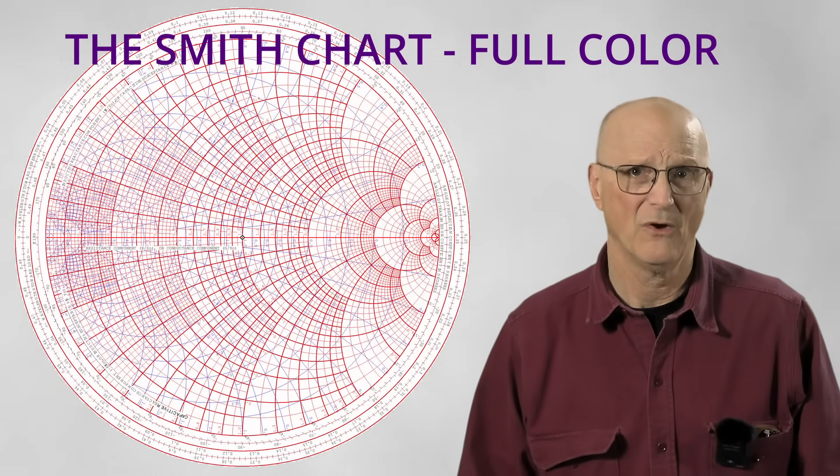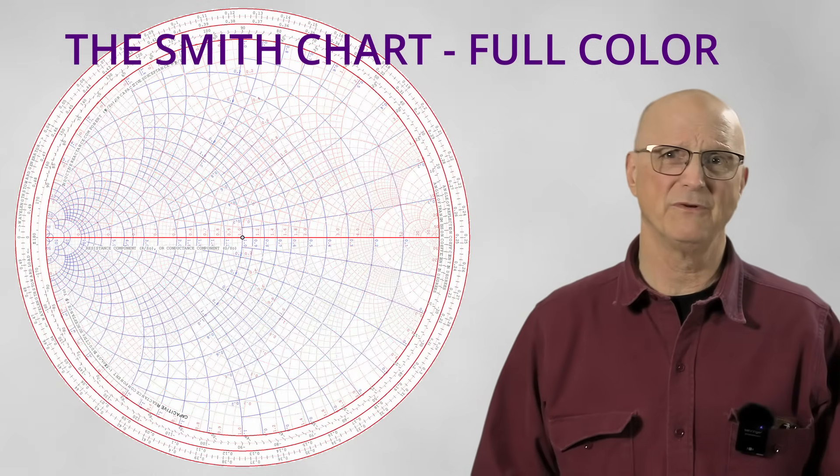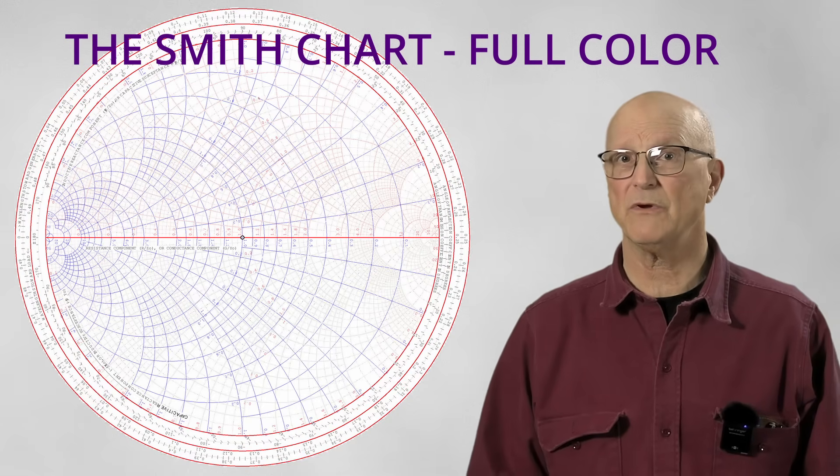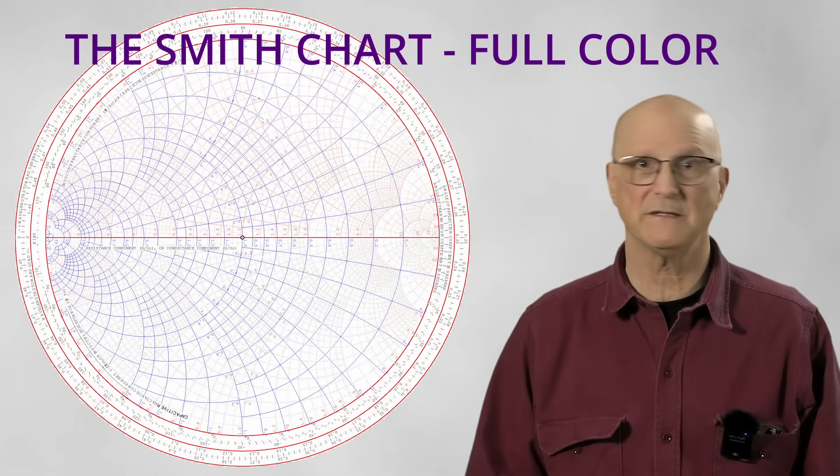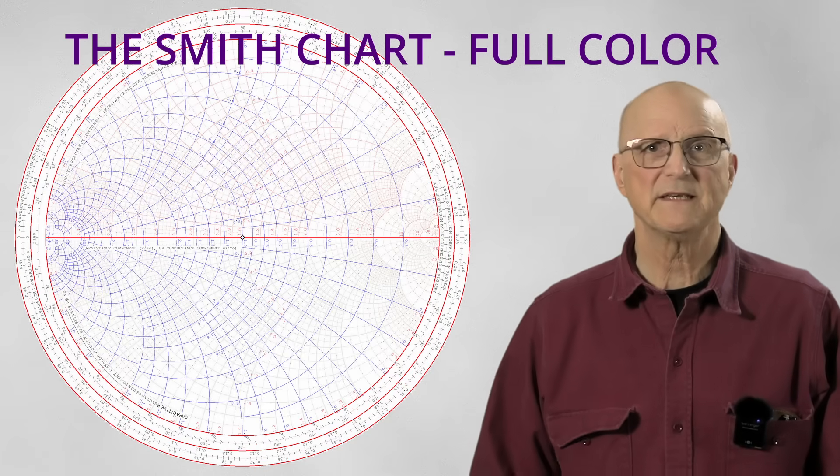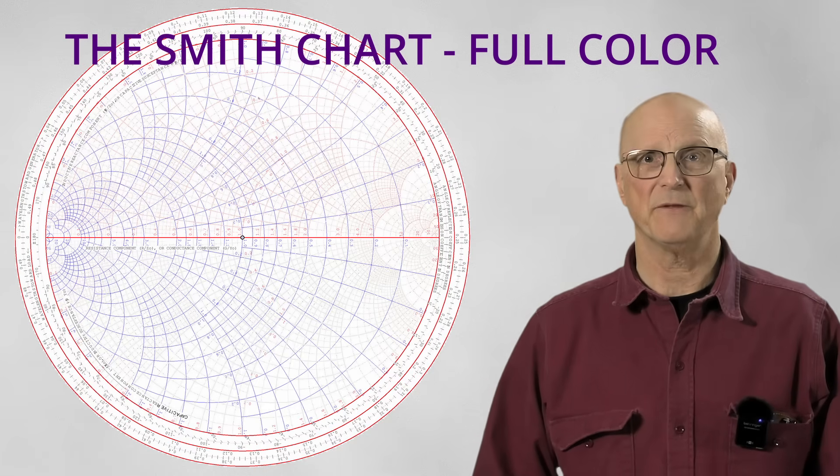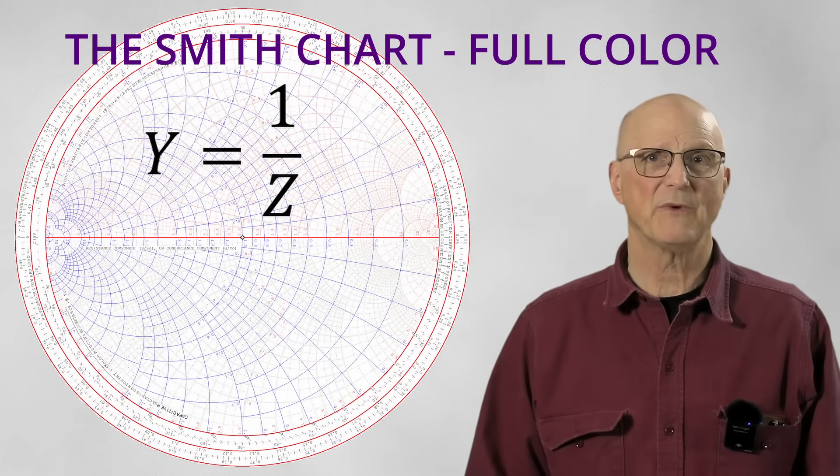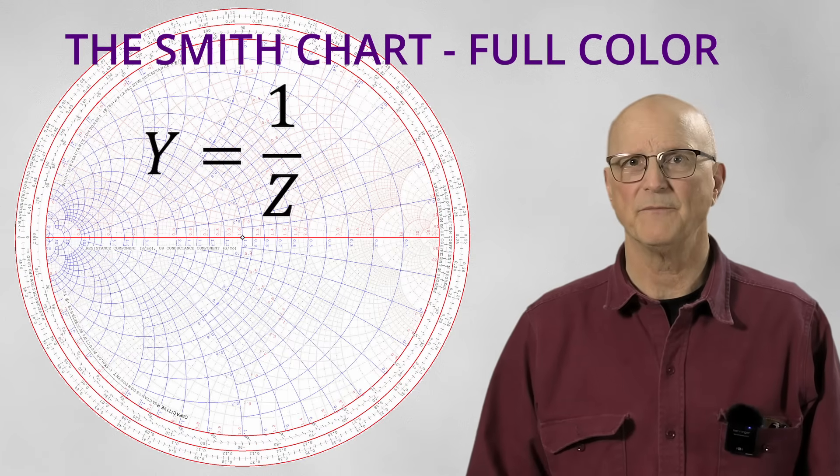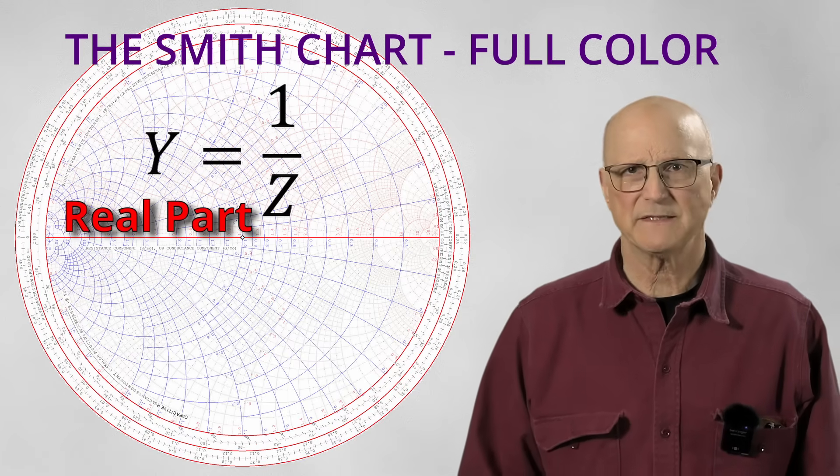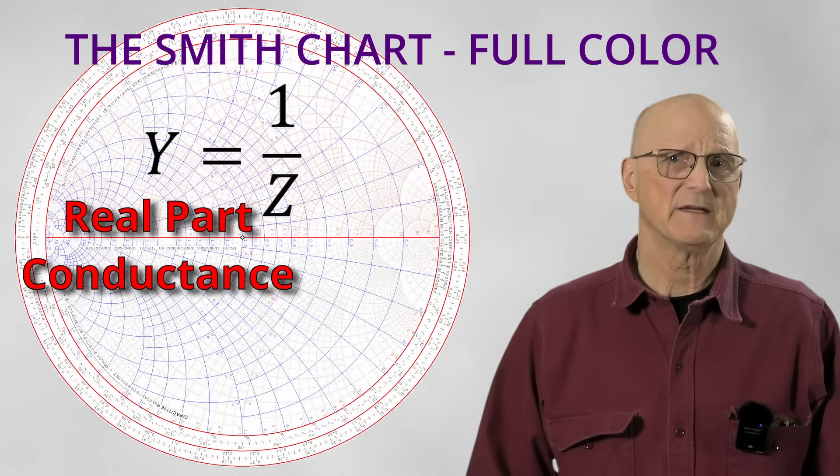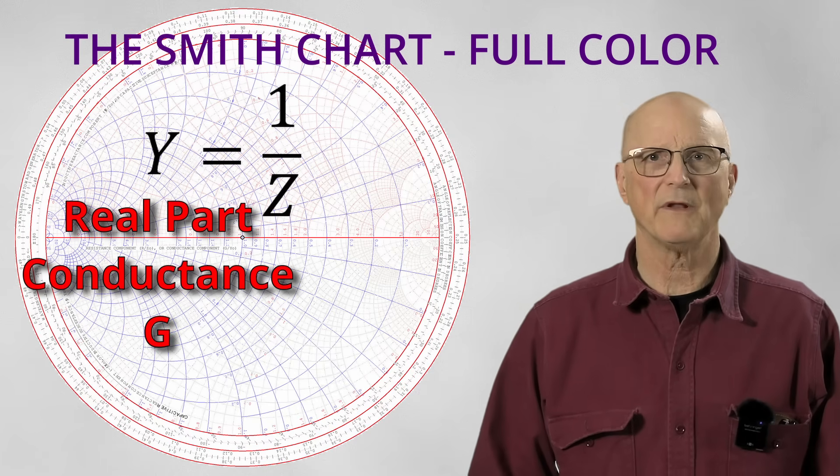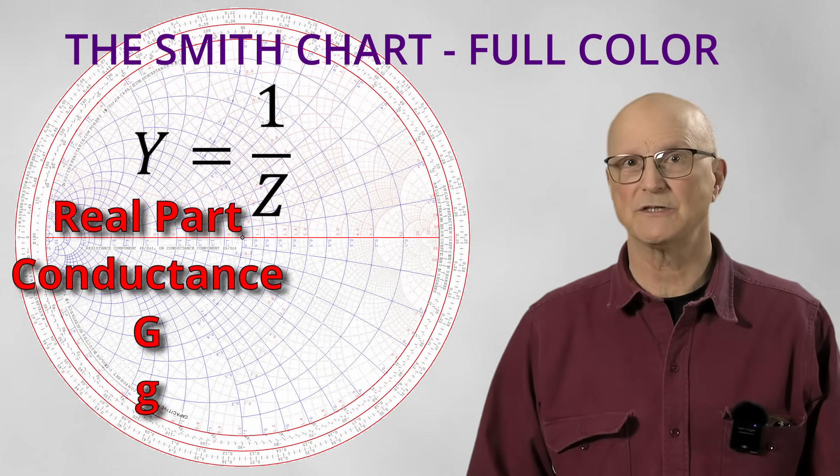But you ask, what are all of the blue lines? You can see the similarity as a mirrored image of the red impedance lines. This is the admittance side of the chart. Admittance is equal to one divided by the impedance and is represented by the letter Y. The real part of admittance is conductance. Conductance is traditionally represented by the uppercase G and the normalized value, the lowercase g.